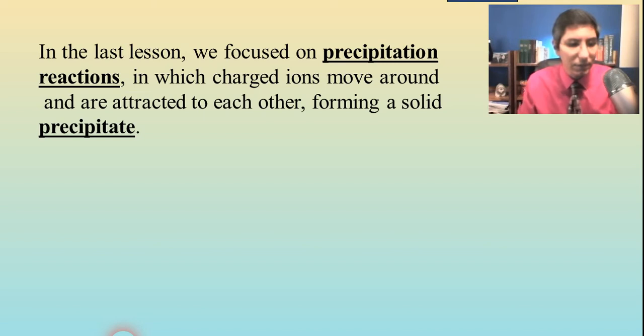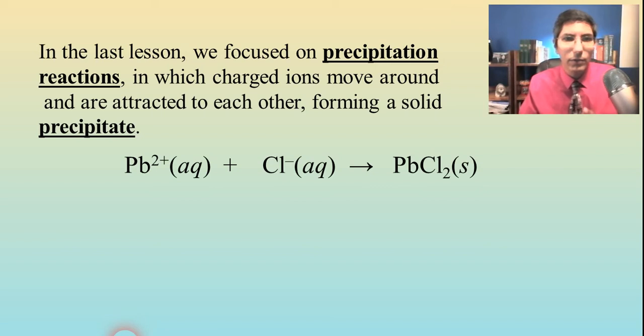In the last lesson, our focus was primarily on precipitation reactions. This is where we had charged ions that are moving around in solution and that were attracted to each other, and they formed a solid precipitate. So let me show you what we had. We might have had a reaction like this where we had lead 2 ions, and they were reacted with chloride ions, and you made lead 2 chloride.